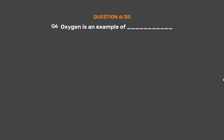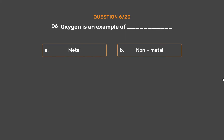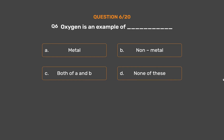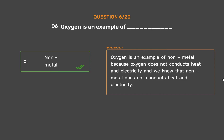Question number 6. Oxygen is an example of ___. Option A: Metal. Option B: Non-metal. Option C: Both A and B. Option D: None of these. The correct answer is Option B: Non-metal. Oxygen is an example of non-metal because oxygen does not conduct heat and electricity, and we know that non-metals do not conduct heat and electricity.